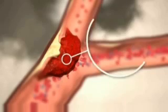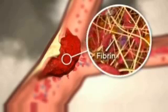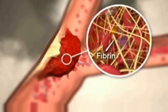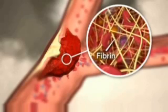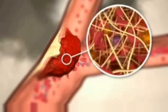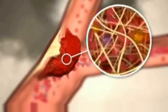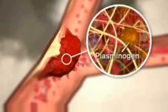Now let's look at the thrombus itself. Inside the thrombus are strands of fibrin, the protein that forms a clot. Enmeshed within the fibrin is plasminogen, the inactive precursor of plasmin.